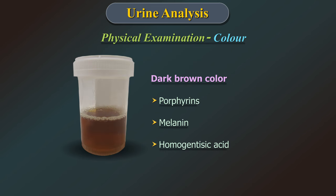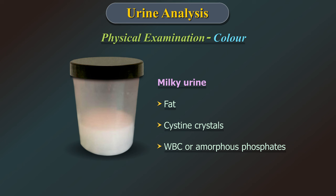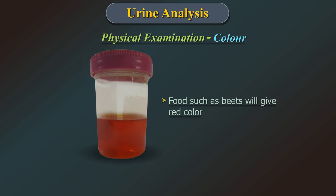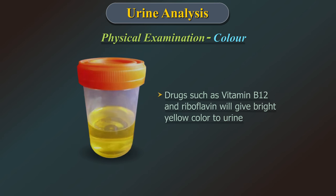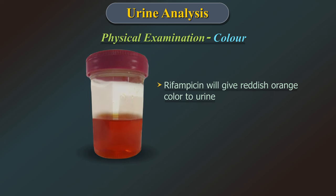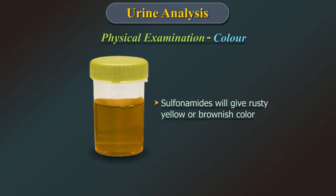Dark brown colour urine may contain porphyrins, melanin, homogentisic acid, which is associated with abnormal metabolism of tyrosine. Milky urine may contain fat, cysteine crystals and many white blood cells or amorphous phosphates. Interfering factors which result in abnormal urine colour are certain foodstuffs and medication. Food like beets will give red colour. Drugs such as vitamin B12 and riboflavin will give a bright yellow colour. Rifampicin gives reddish-orange colour. Iron salt will give dark colour. Sulphonamides give rusty yellow or brownish colour.